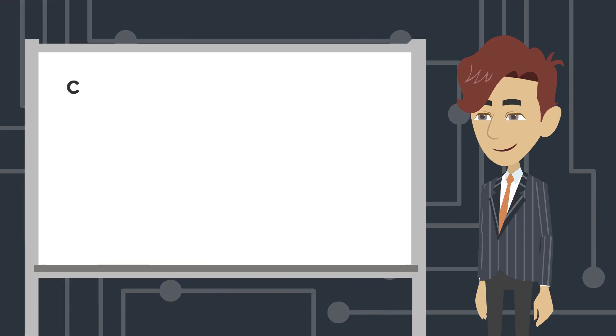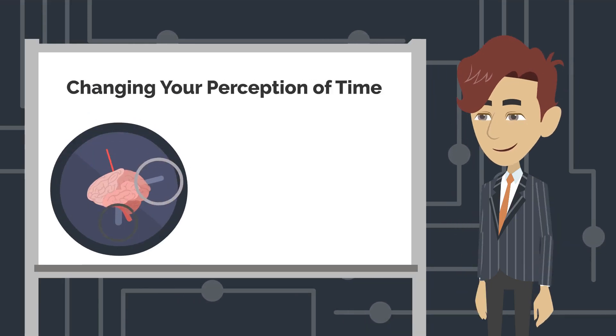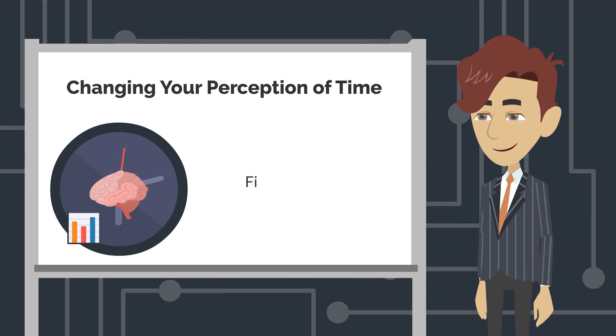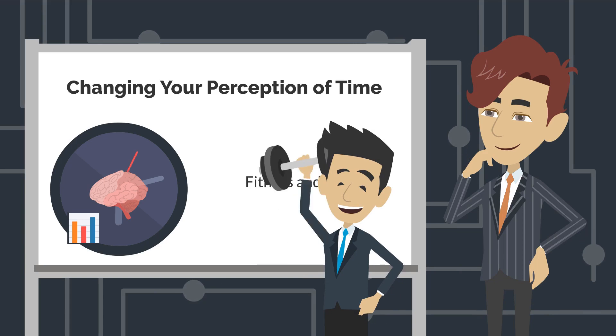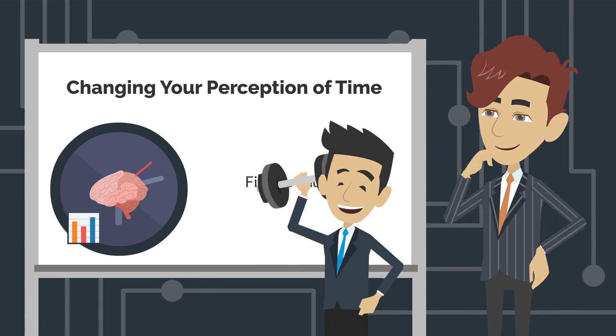Changing your perception of time is a way to work on your mind power in your business. There are many ways this can be done, including fitness and dieting. With fitness, you want to focus on the benefits and not the process. This allows you to get up at 7 AM instead of 8 AM and still feel like you accomplished something.